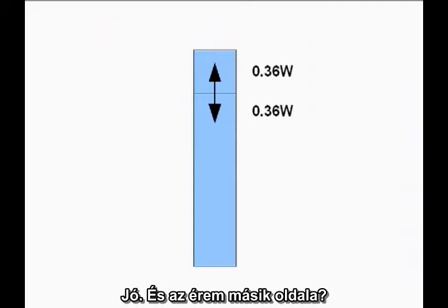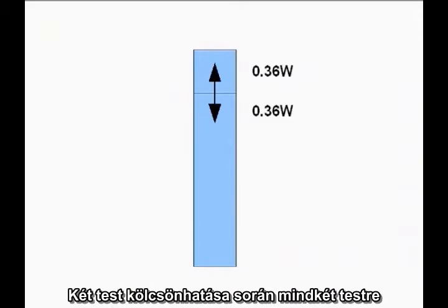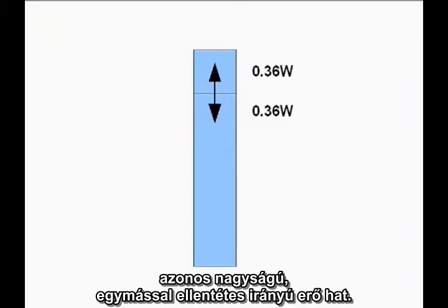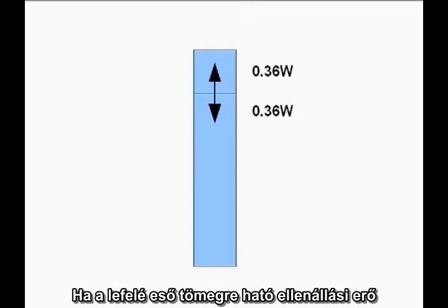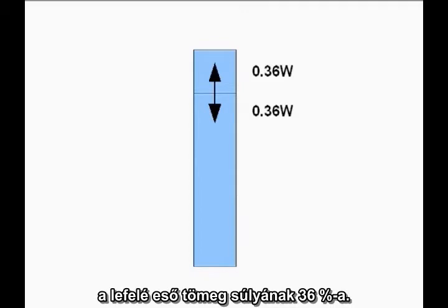But now turn it around. Newton's Third Law says interactions between objects work both ways. The forces two objects exert on each other are always equal and opposite. If the upward force acting on the falling block is 36% of the weight of the falling block, the downward force exerted by the falling block must be exactly the same — 36% of the weight of the falling block.